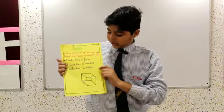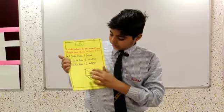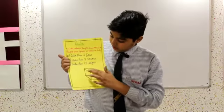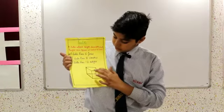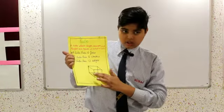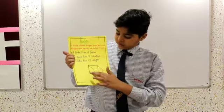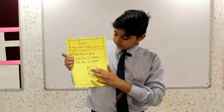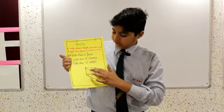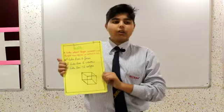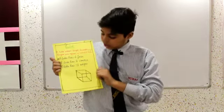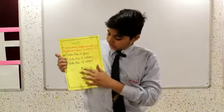A cube has eight vertices. One, two, three, four, five, six, seven, eight.